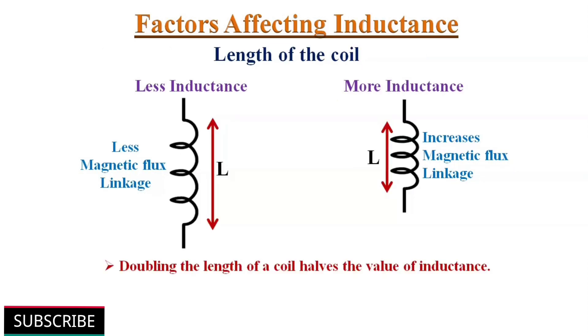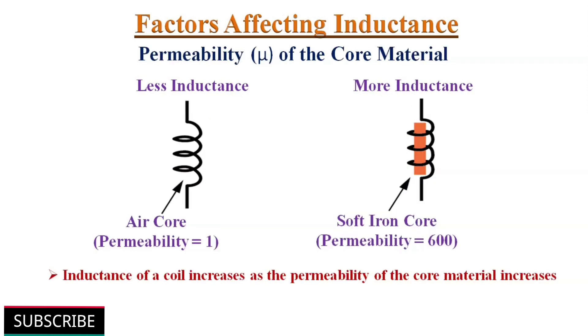Third one, length of the coil. The length of the inductor's coil is inversely proportional to the inductance of the coil. The longer the coil's length, the lesser the inductance. The shorter the coil's length, the greater the inductance. The closer spacing increases the flux linkage, so increasing the inductance of the coil. If you double the length of a coil, its inductance becomes half.